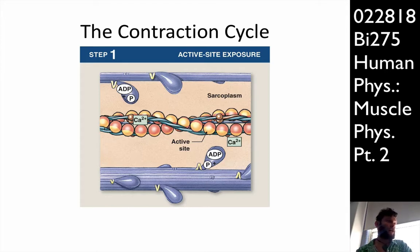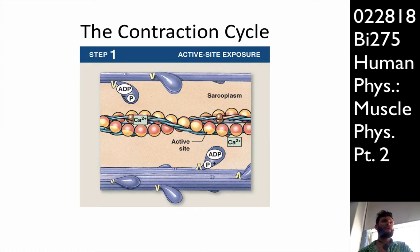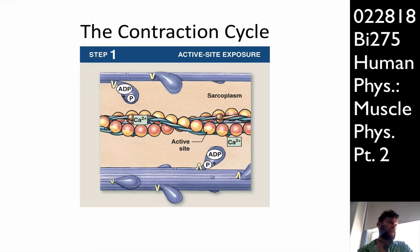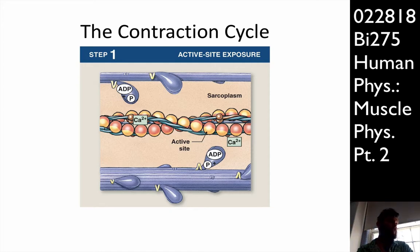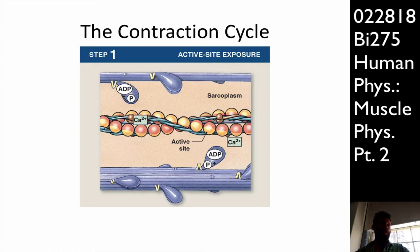Last time I started the contraction cycle. Let's review a little bit and then push through the end of it. At the beginning of the contraction cycle, calcium has been released from the sarcoplasmic reticulum through excitation-contraction coupling. Calcium binds to troponin and rolls the tropomyosin off the active site of the actin filaments — the F-actin. Once that happens, the myosin head group is free to form a crossbridge and bind to the actin.